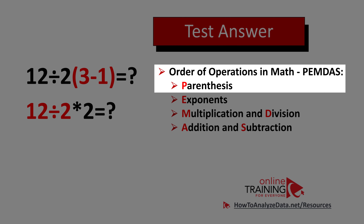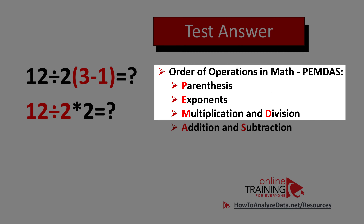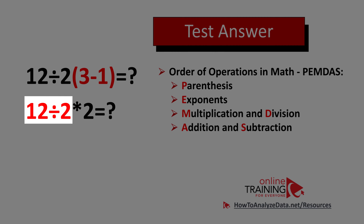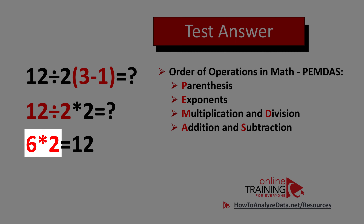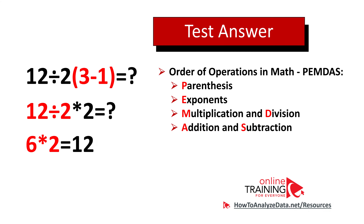The order of operations PEMDAS tells us we need to do multiplication and division, but what it doesn't mention is that we need to do it from left to right. The acronym itself is a little confusing because it shows multiplication first and then division, but in our case we need to do division first. We divide 12 by 2 to get 6, and then multiply 6 by 2. The correct answer is 12.